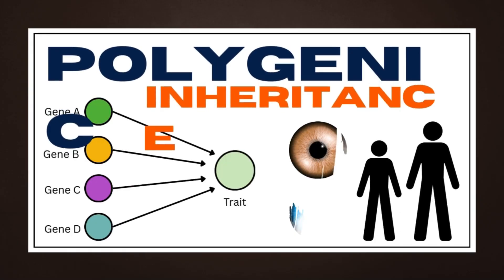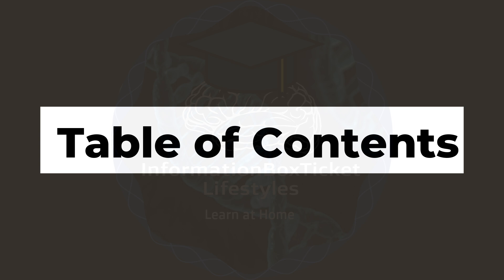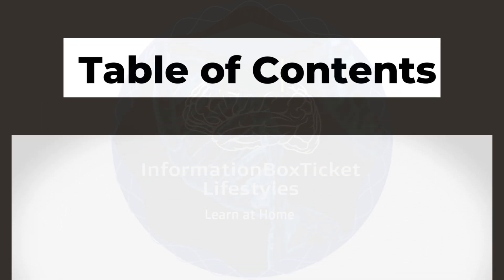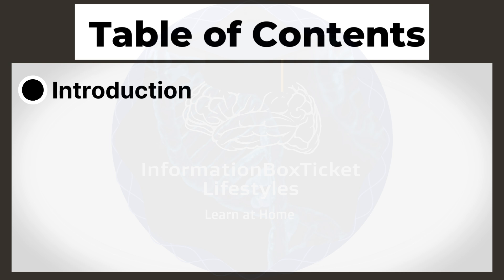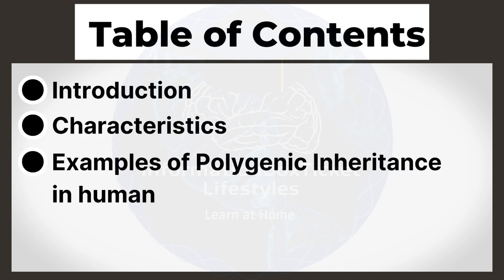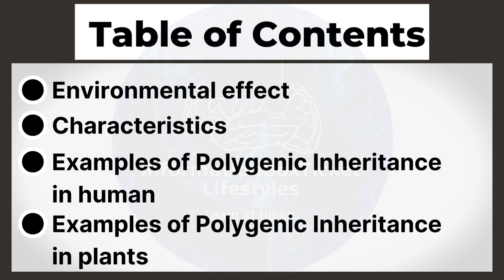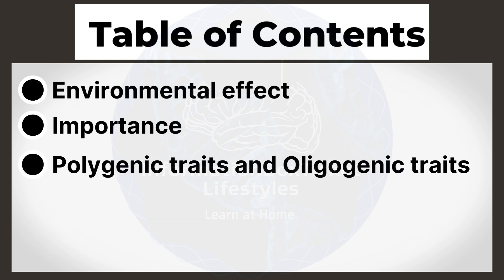Polygenic Inheritance Explained: Traits, Examples, and Environmental Impact. Table of Contents: Introduction to Polygenic Inheritance, Characteristics of Polygenic Inheritance, Examples of Polygenic Inheritance in Humans, Examples of Polygenic Inheritance in Plants, Environmental Effect on Polygenic Inheritance, Importance of Polygenic Inheritance, Polygenic Traits and Oligogenic Traits.